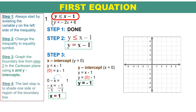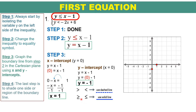Start with the x-intercept — the value is 1, so plot it on the x-axis. Then the y-intercept is negative 1, so plot it on the y-axis. Draw a line connecting these two points. Take note: if the inequality symbol is greater than or less than, use a dashed line; if it is greater than or equal to or less than or equal to, use a solid line. Since the symbol here is less than or equal to, use a solid line to connect the two points.